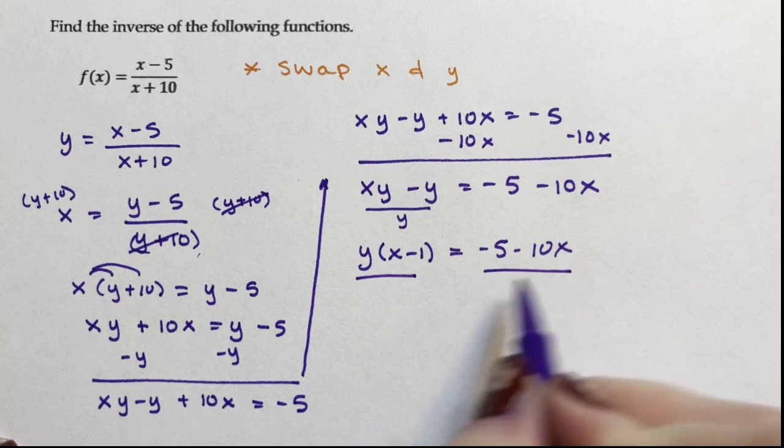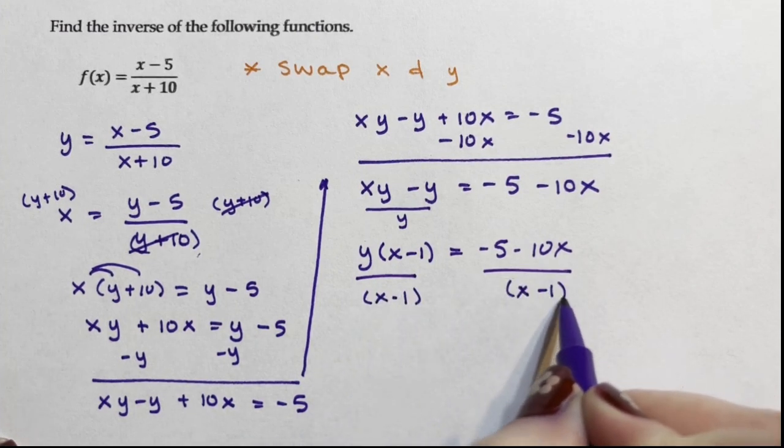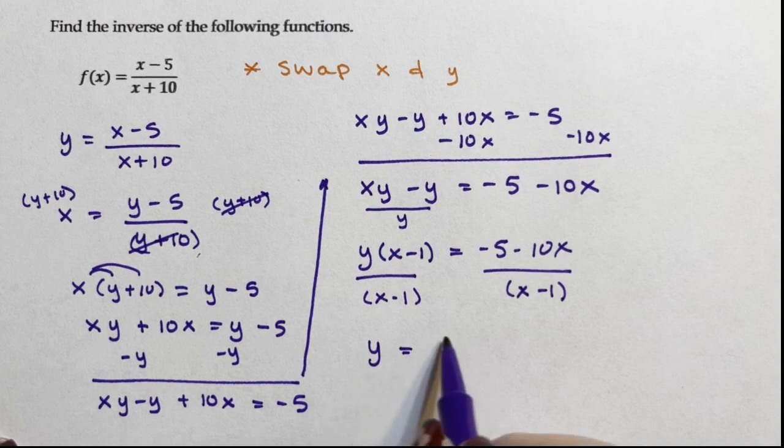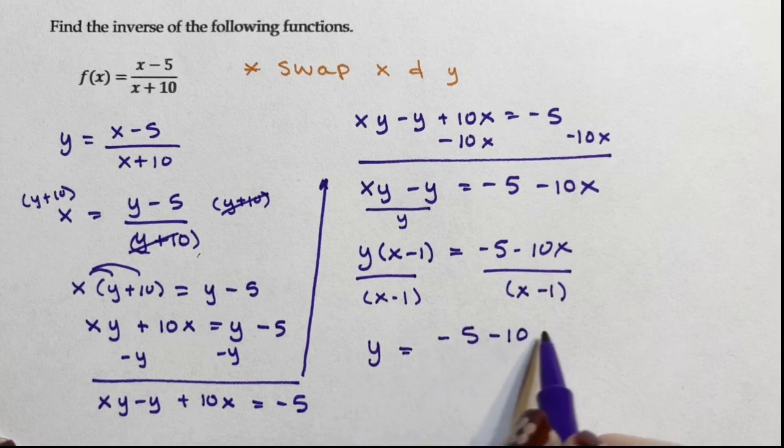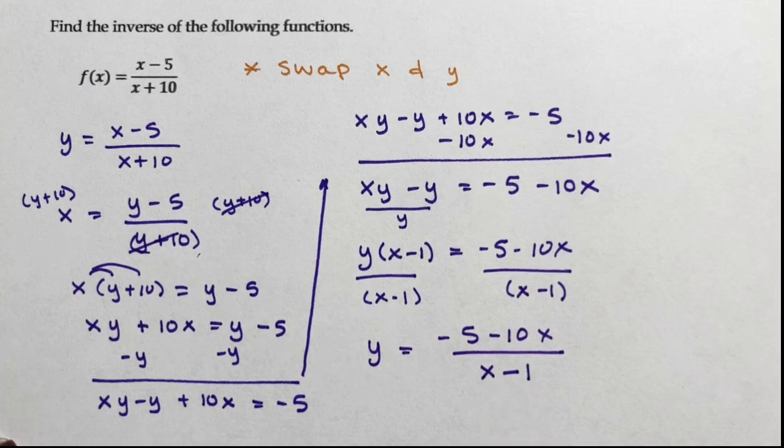I'm going to divide both sides by x minus 1. So that y equals negative 5 minus 10x over x minus 1.